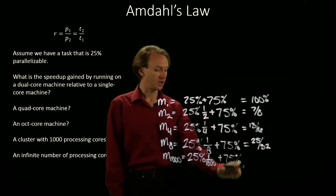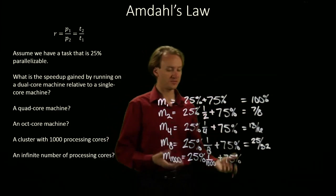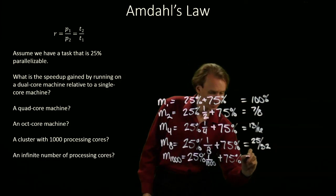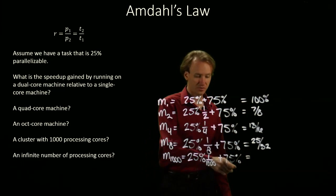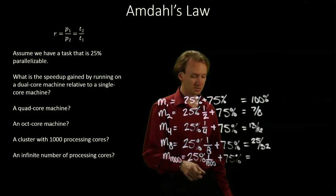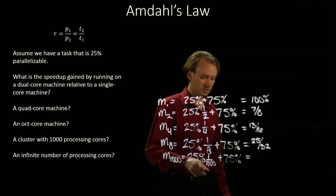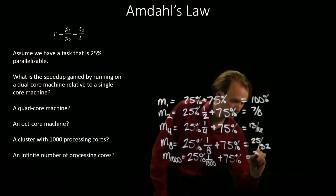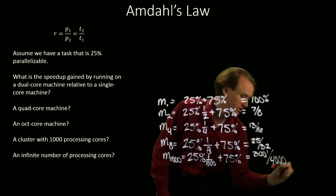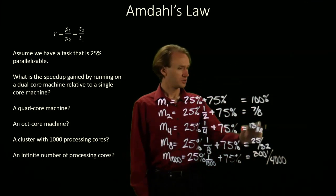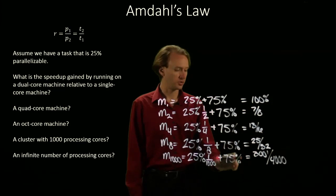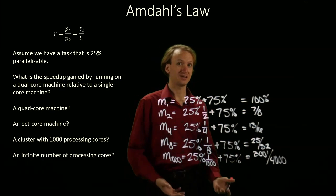But since I've got this 75% that's still unaffected, I'm not going to get a huge improvement. I've got 3/4 plus 1/4000, which gives me 3001/4000. You can probably see where these are going—they're getting progressively closer to the 3/4 that we can't affect.